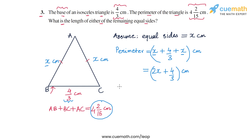And now we also know that this perimeter must be equal to 4 and 2 by 15 centimeters. That's what's given to us. So from here we get an equation in x. So 2x plus 4 by 3 should be equal to 4 and 2 by 15. I can write 4 and 2 by 15 as 15 into 4, 60 plus 2, so 62 by 15 centimeters.